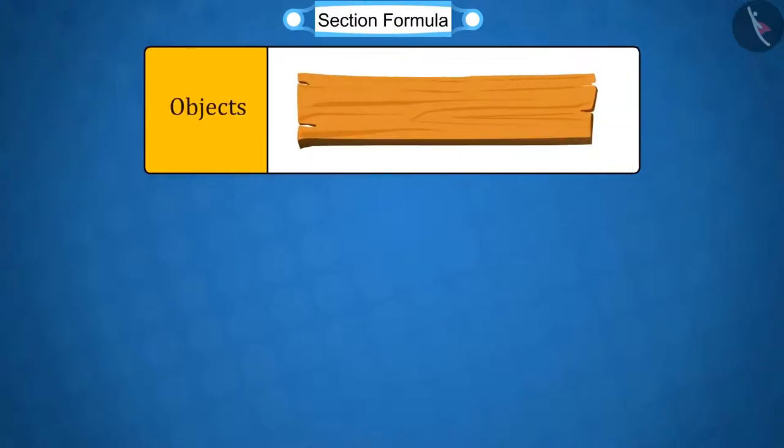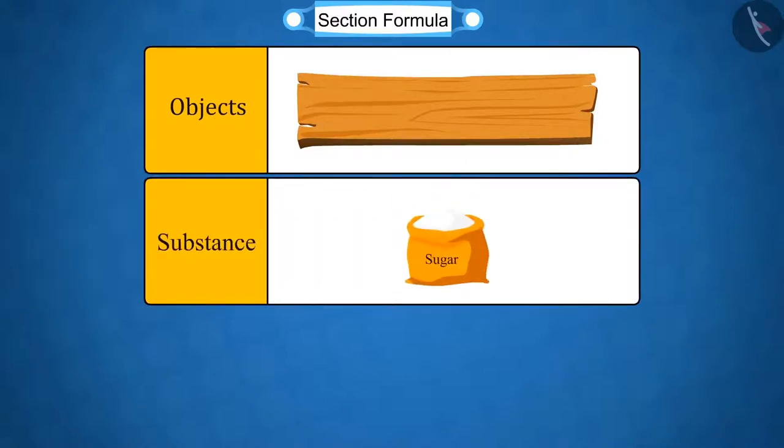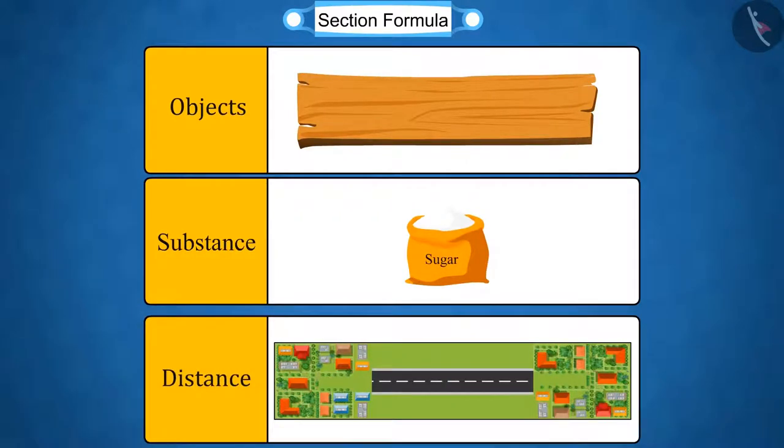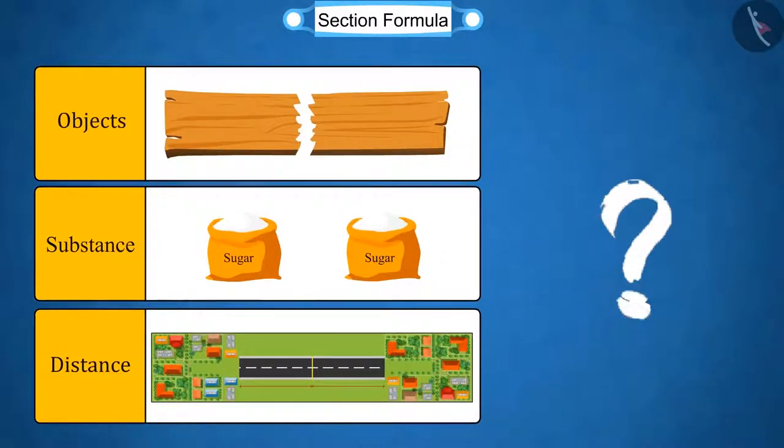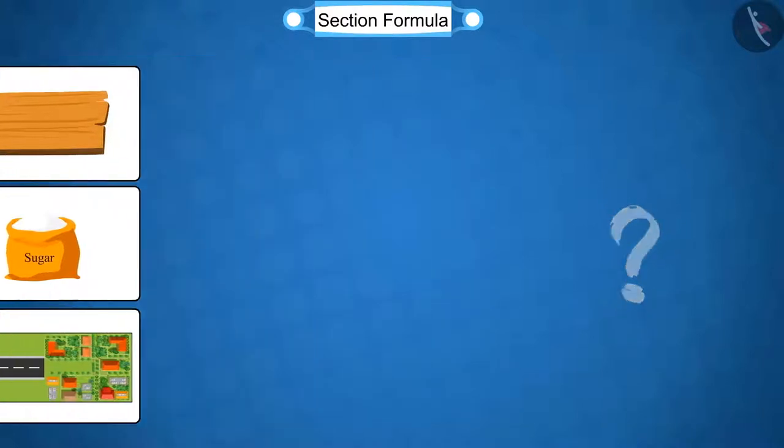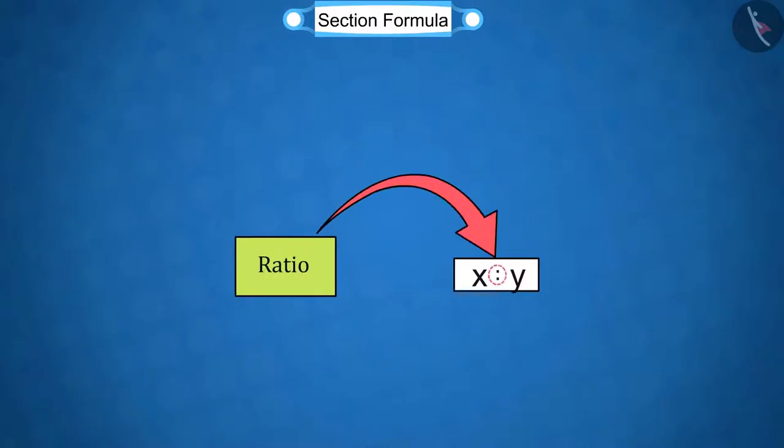You all know that in order to divide an object, substance, distance, etc. in equal ratios, we divide it into half - that is, into two equal parts. So can you tell how an object, substance, distance, etc. are divided into different ratios? Absolutely correct. For this, we use the ratio.